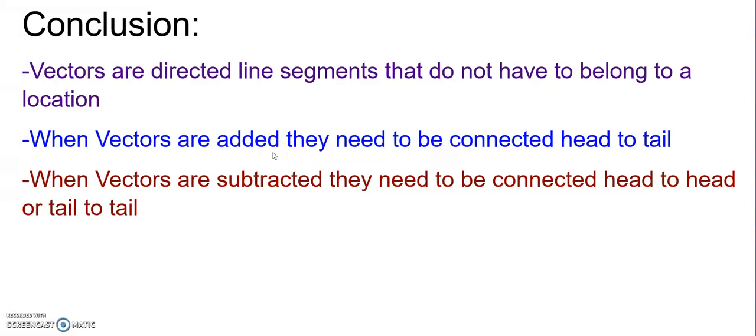When vectors are added geometrically, we need to connect them head to tail. When vectors are subtracted geometrically, they need to be connected head to head or tail to tail.